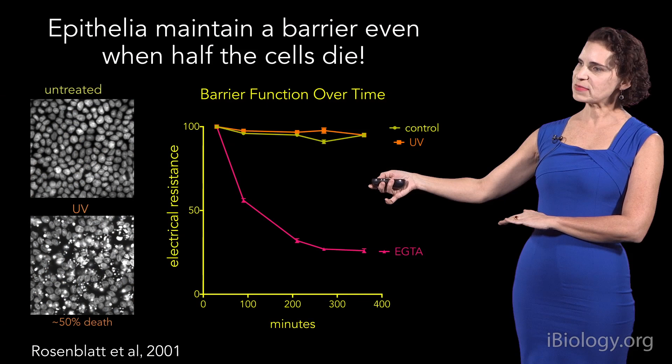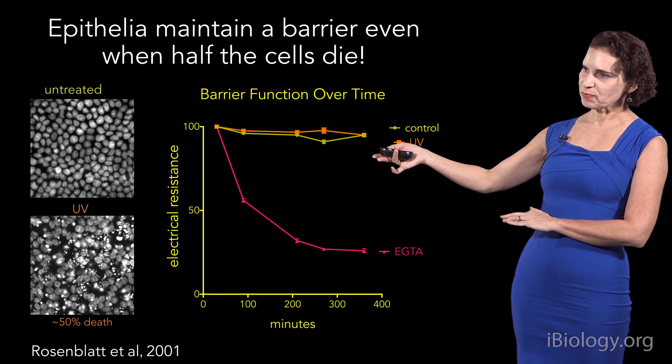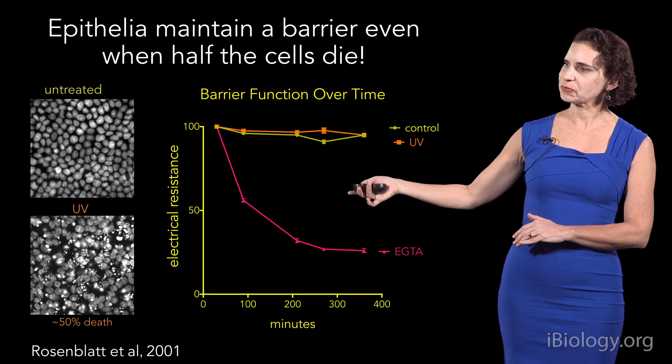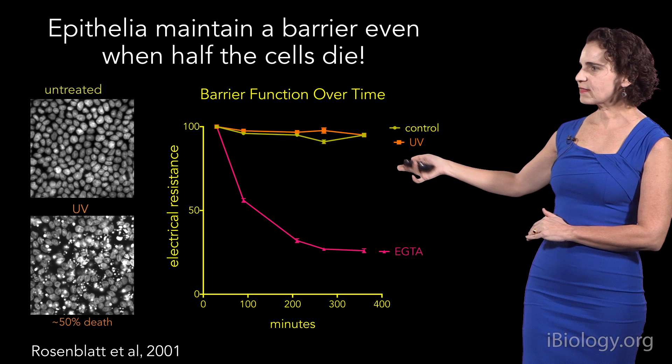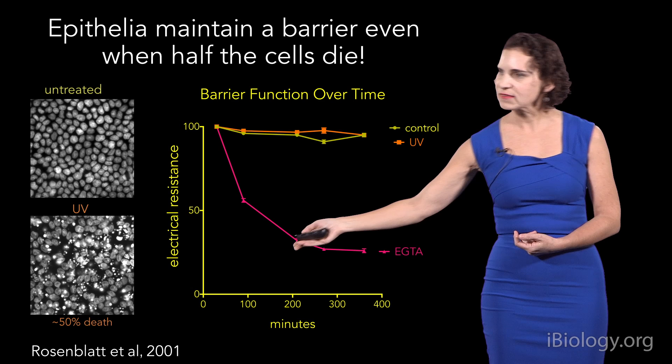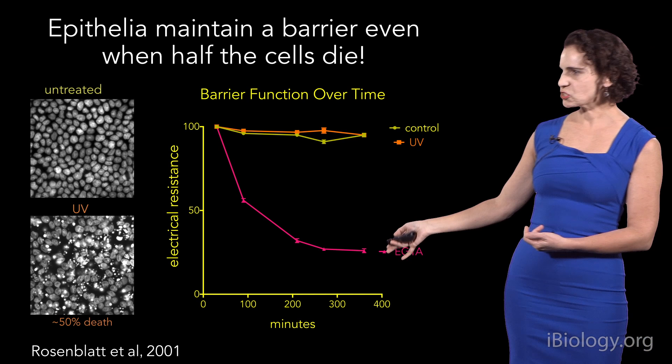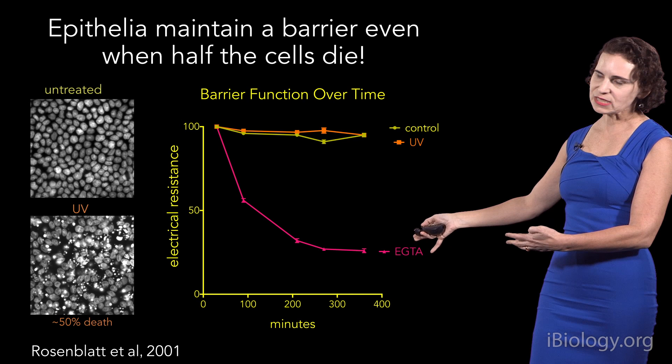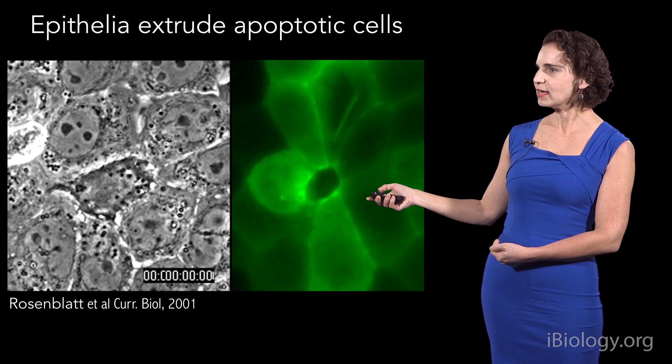To do this, we took cells in culture and plated them on filters so we could measure their electrical resistance over time as a measure of barrier function. When we triggered cells to die with a pulse of shortwave UV, you can see that they're able to maintain the same constant barrier as control monolayers where there's no cell death. Even at the last time point, around 50% of the cells are actually dead, but they're still able to maintain a functional barrier.